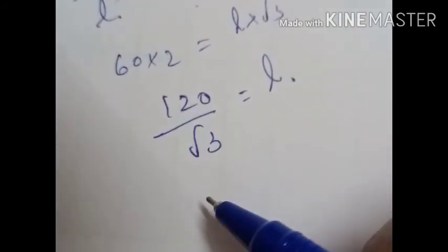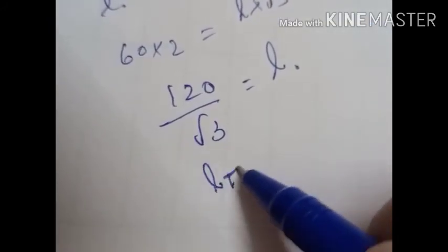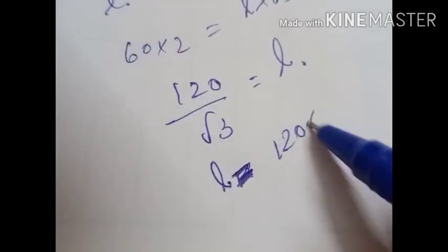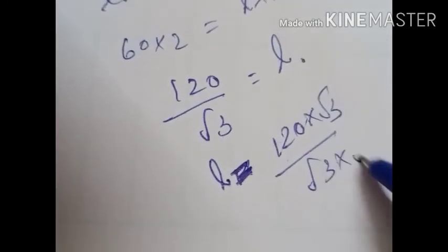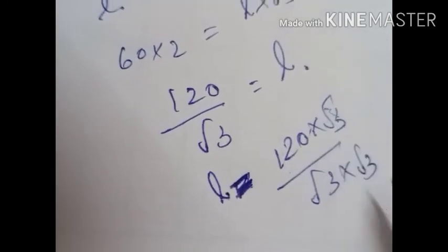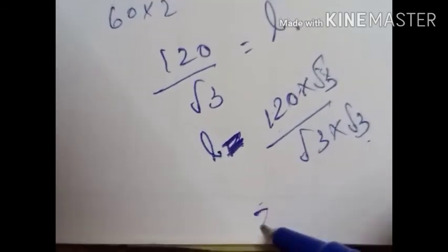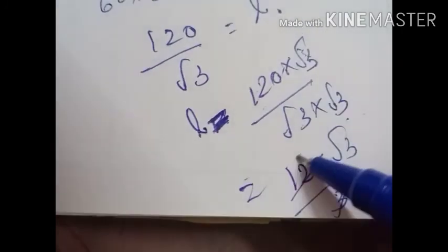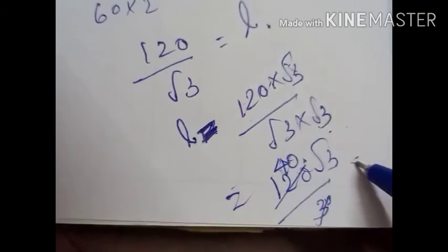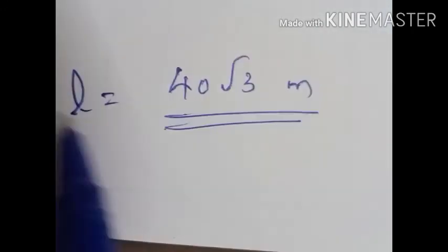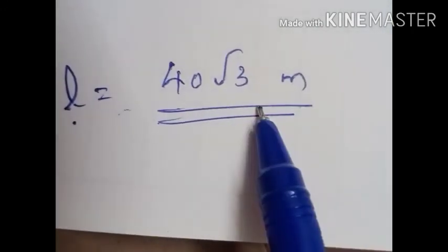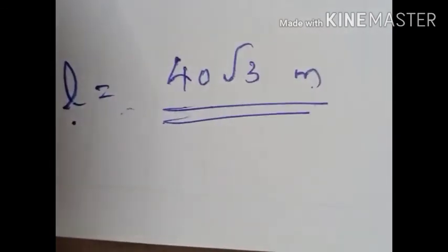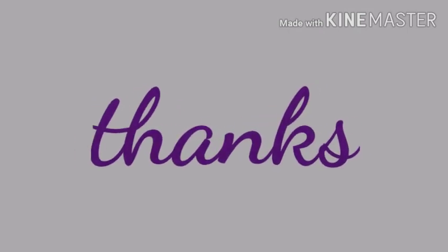Here we have to rationalize. L equals 120 into root 3 by root 3 into root 3, multiplying both numerator and denominator by root 3. We get 120 root 3 by 3. Since 120 and 3 can be simplified, we get 40. So the length of the string L equals 40 root 3 meter. That's all for today. Thank you and have a nice day.